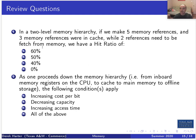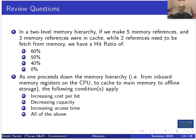Let's review some quick questions. In a two-level memory hierarchy, if we make five references and three memory references were in cache while two needed to be fetched from main memory, what's the hit ratio? The cache is the faster, higher-level memory and main memory is the slower memory. We had three hits out of five total references, so the hit ratio is 3/5 = 60%.